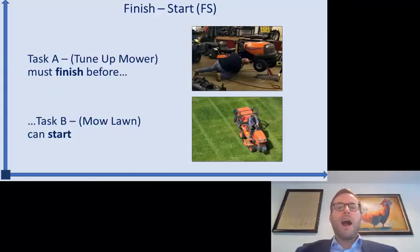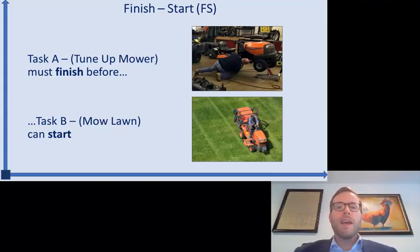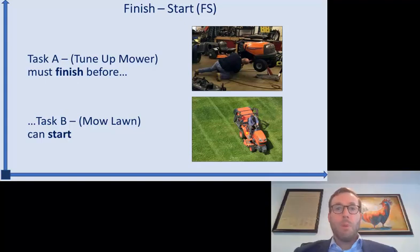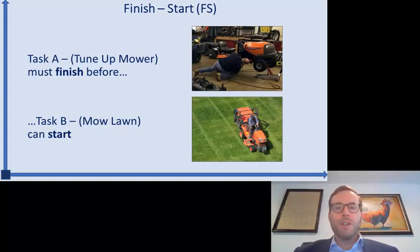Let's start with the most common relationship type: finish-to-start. Task A must finish before task B can start — there's a logical dependency that says I have to do A before I can do B. In this example, task A is tuning up the lawnmower and task B is mowing the lawn. I need to put the mower back together, put the blades back on, tighten all the screws and bolts — I need to finish tuning up the mower before I can start mowing the lawn.